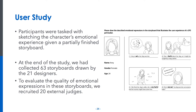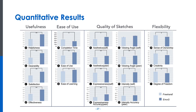To evaluate the quality of emotion expressions in these storyboards from another perspective, we recruited 20 external judges who were shown the storyboards one at a time. The quantitative results showed that Emoji outperforms freehand in terms of usefulness, ease of use, and the quality of sketches. Specifically, our external judges believed that Emoji can generate high-quality results regarding aesthetics, viewing angle, expressiveness, and intensity accuracy.